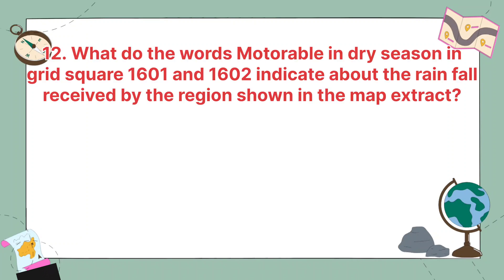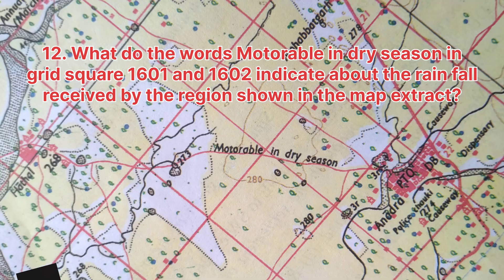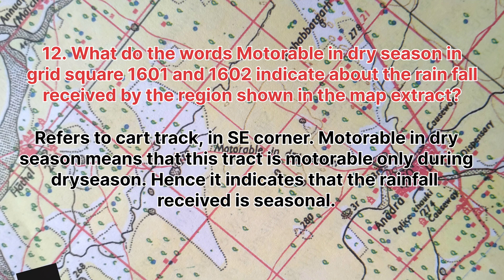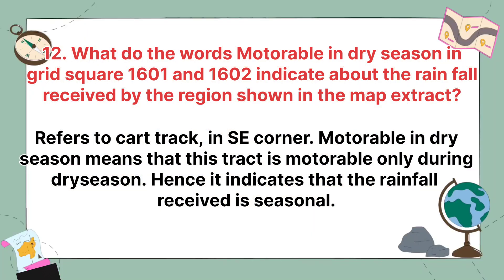What do the words 'motorable in dry season' in grid squares 1601 and 1602 indicate about the rainfall received by the region? This refers to a cart track in the southeast corner. 'Motorable in dry season' means that this track is motorable only during the dry season, hence it indicates that the rainfall received is seasonal.